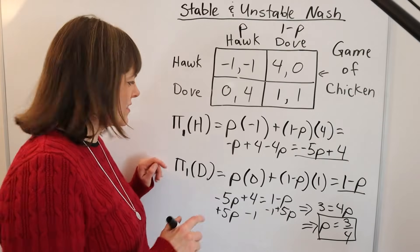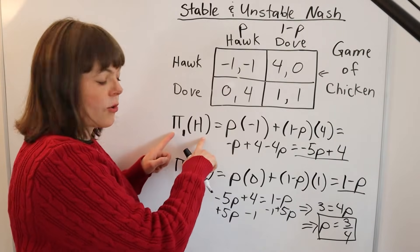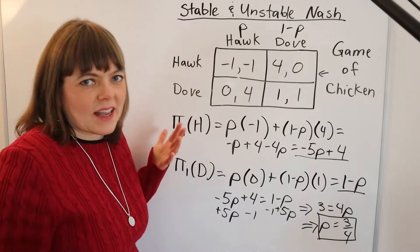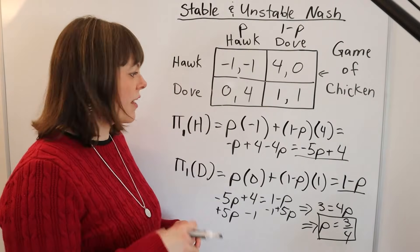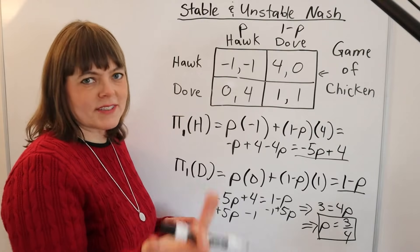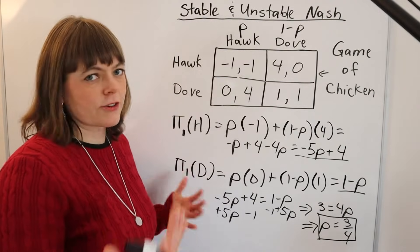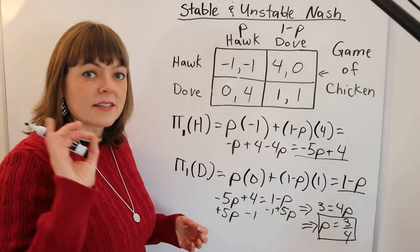Of course, I could redo this for player two's payoff of going Hawk, but it would look exactly the same since it's a symmetric problem. Let me show you the other method for doing this, which involves optimization problems if you know how to take first order conditions.